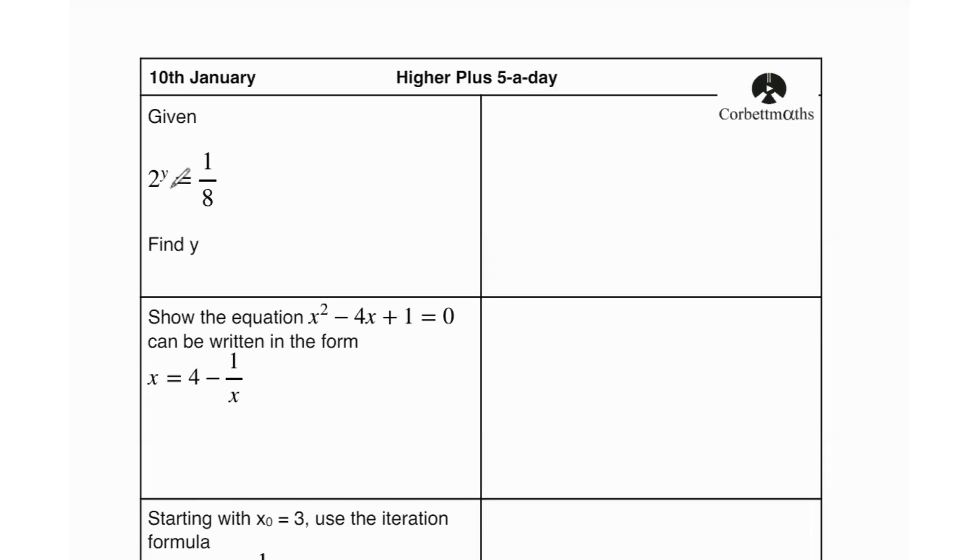The first question says: given that 2 to the power of y equals 1 over 8, find the value of y. Now we know 8 is 2 cubed, so let's replace 8 with 2 cubed first. So 2 to the power of y equals 1 over 2 to the power of 3. Now I want to bring 2 to the power of 3 to the numerator.